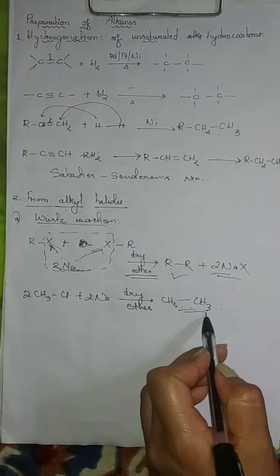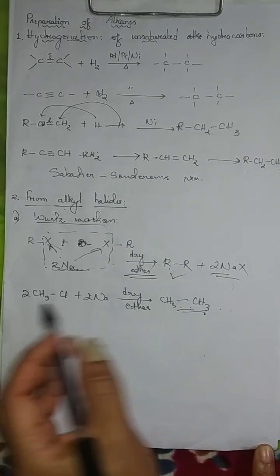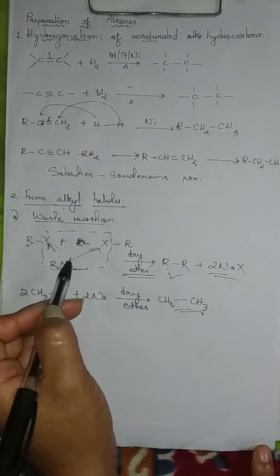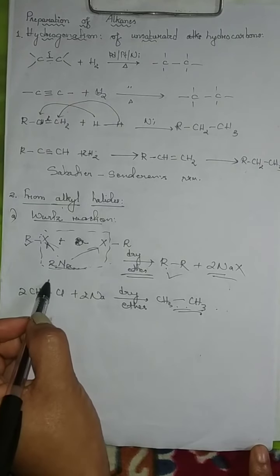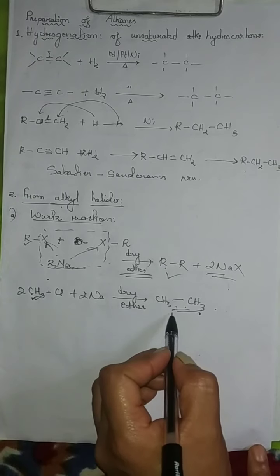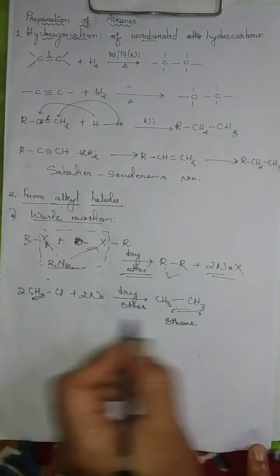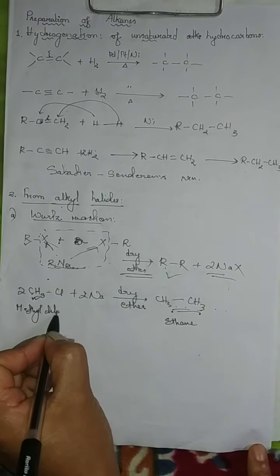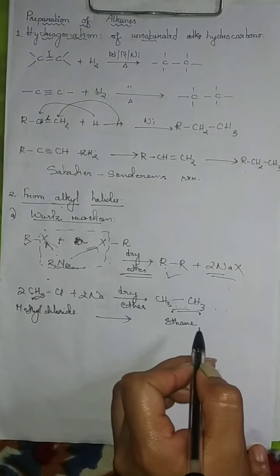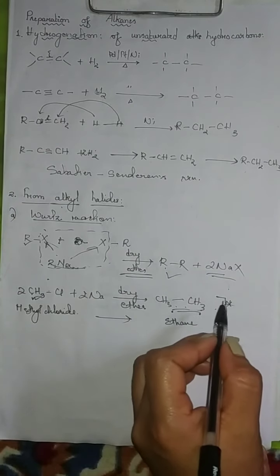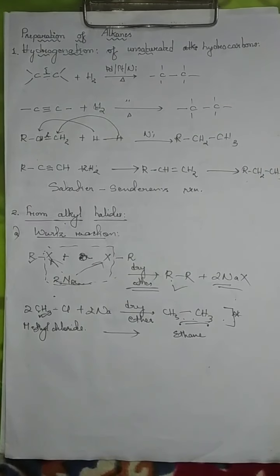In the Wurtz reaction, it is important to note that even numbers of carbon atoms are formed in the product. The product has one carbon more per molecule than the starting material — for example, starting with methyl chloride (one carbon) gives ethane (two carbons). The product always has an even number of carbon atoms.